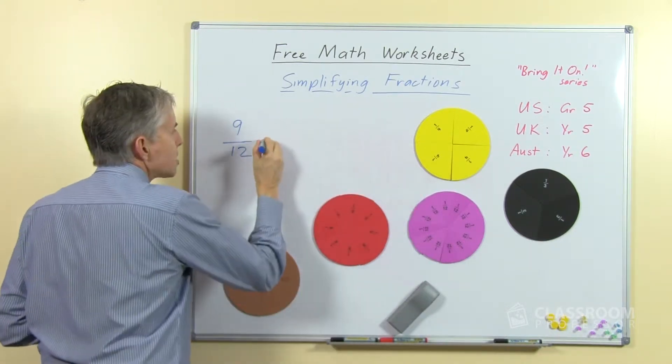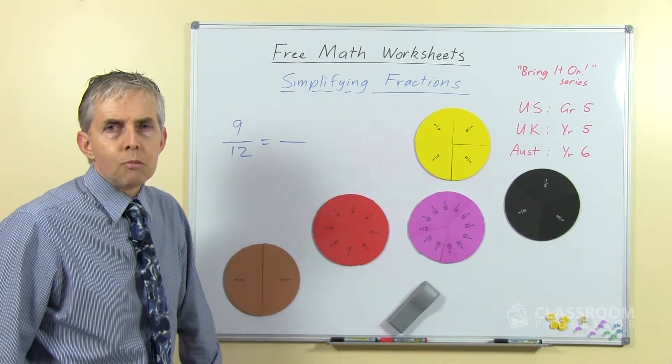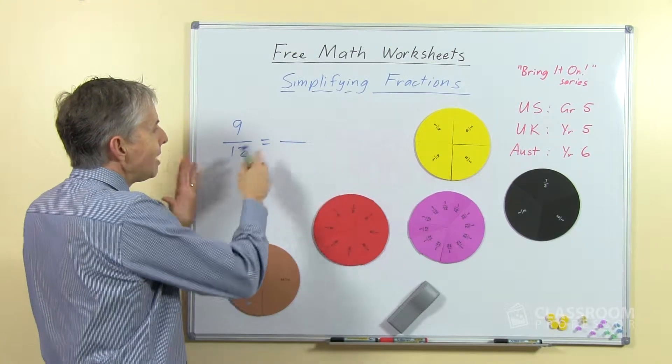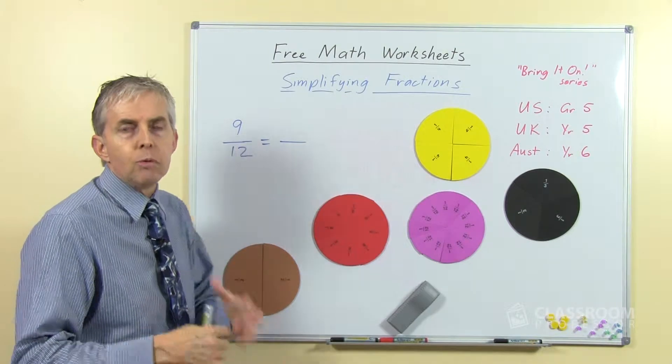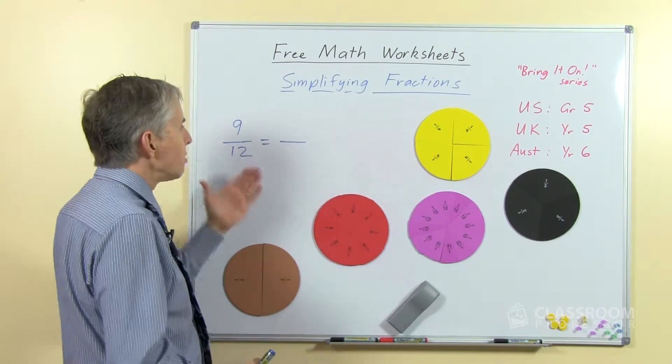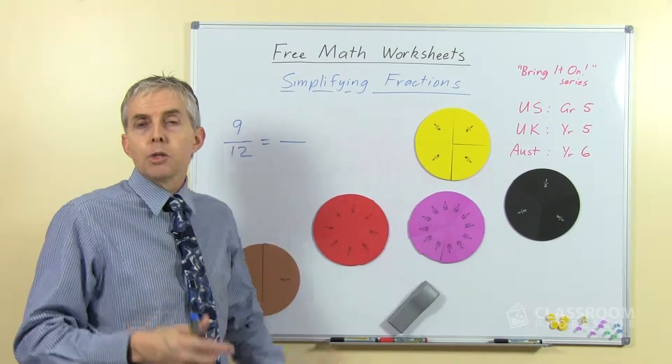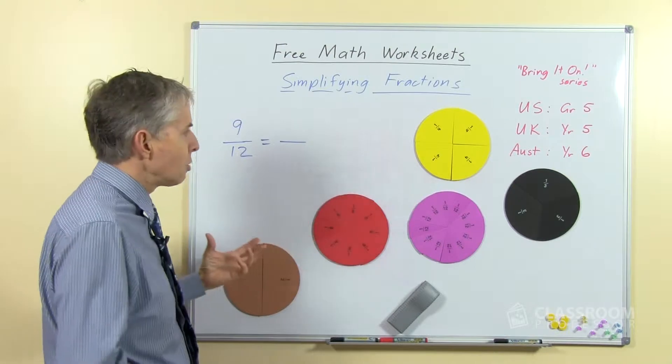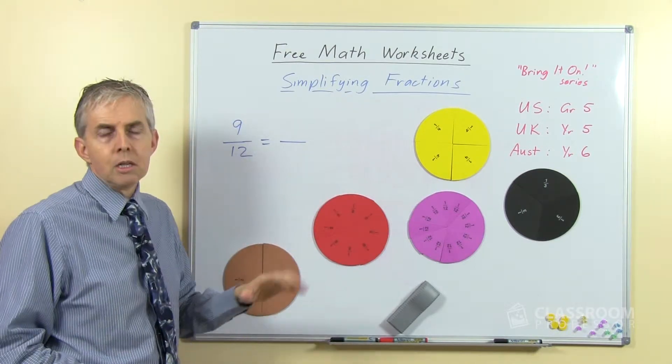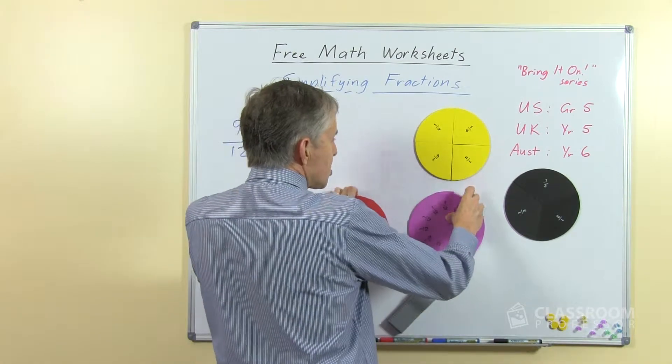So we're going to pose this question to our students, nine-twelfths equals what? And we want our students to find a new fraction. Now we would do that in an equivalent fraction exercise, and of course there's an infinite number of answers, so we can make up all sorts of fractions that are equal to nine-twelfths. But in this particular one, we're looking for a simpler fraction. Simpler meaning the numbers are smaller.